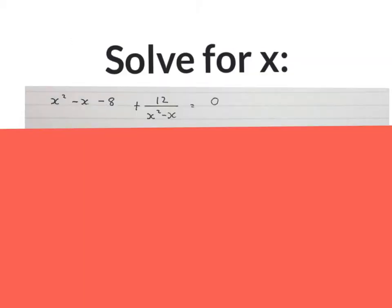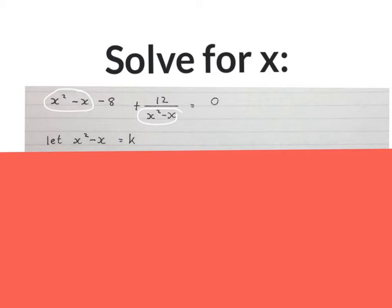Here is our second equation. It says solve for x, and they give us this. In this case, we're going to make these two pieces equal to K. So you write, let x squared minus x equal to K.